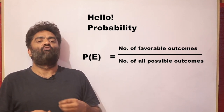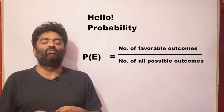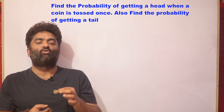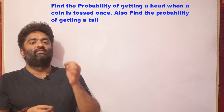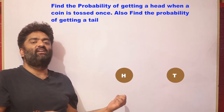We need to understand what an event is, what all possible outcomes means, and what a favorable outcome is. Try tossing a coin a few times. Within a minute you will see that when tossing a coin, the number of possible outcomes is two — either you get a head or a tail.